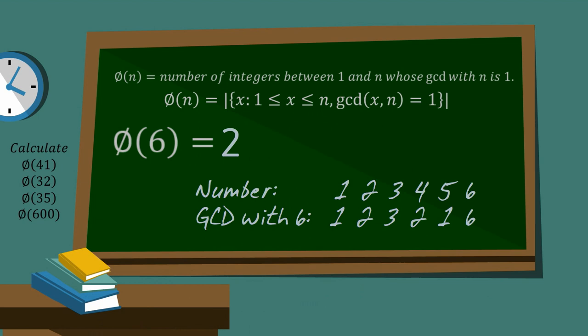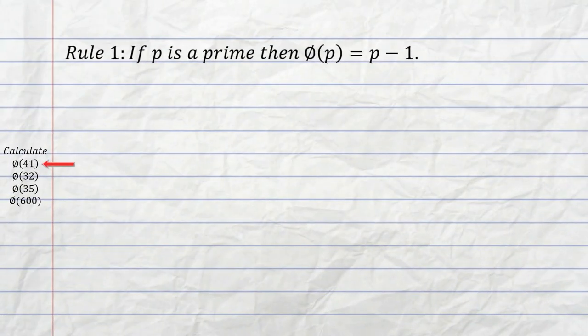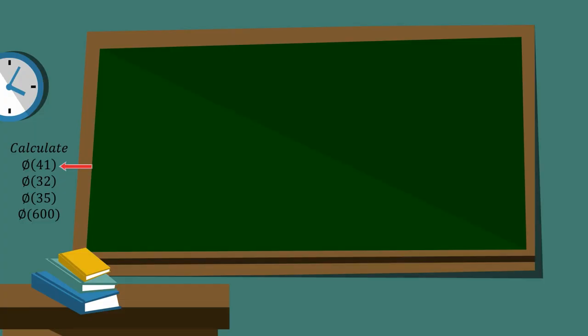Now this works well for 6. We can count it that way, but once you get into bigger numbers, you need some rules that make it easier. So the first rule we're going to use is this one. If p is a prime, then phi of p is equal to p minus 1. And we can use that for our first problem, which I've indicated here, phi of 41.